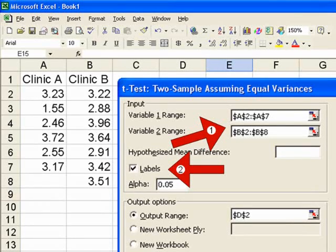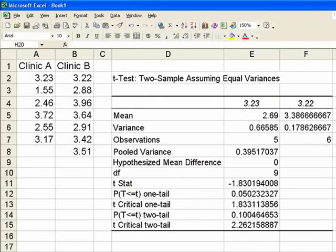What will happen when you do that, is at the top of your data, instead of saying clinic A and clinic B, what it will say is it will give your first data point. It thinks 3.23 is a label, not a number. It thinks 3.22 is a label, not a number. So it labels your columns with those. And it doesn't include them in the observations. So instead of having six observations for clinic A, we only have five. And instead of having seven for clinic B, we only have six.